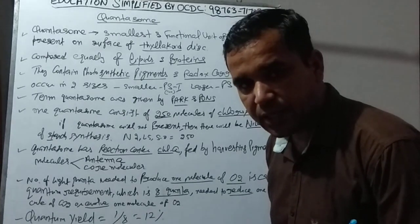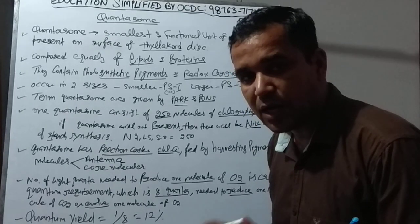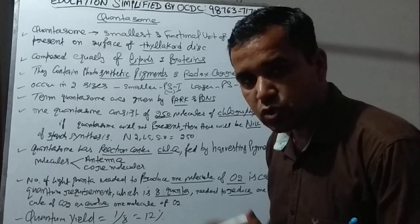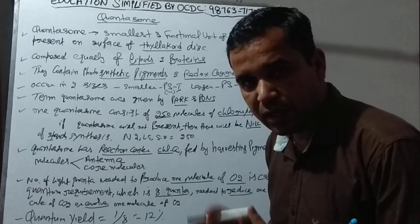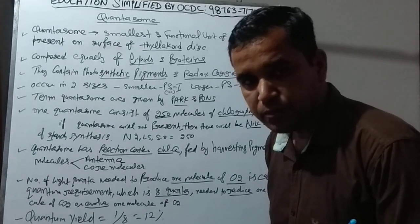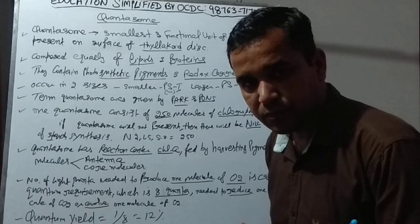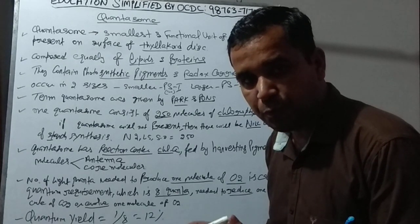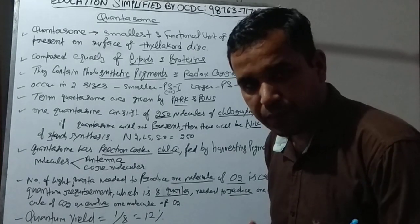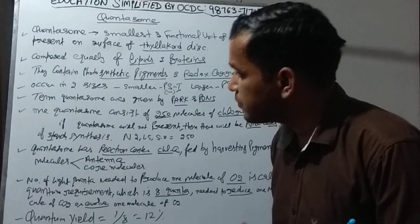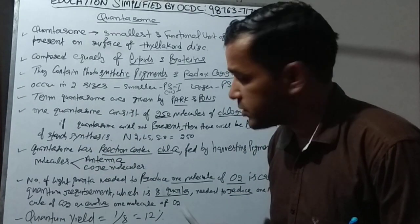The term 'quantasome' was coined and the discovery was made by Park and Biggins. As I explained in my previous video, a memory technique to remember this: if quantasome is not present in sufficient amount, then photosynthesis will not start — it will not begin. So 'begin' helps us remember 'Biggins,' and 'Park and Biggins' discovered and named the quantasome.